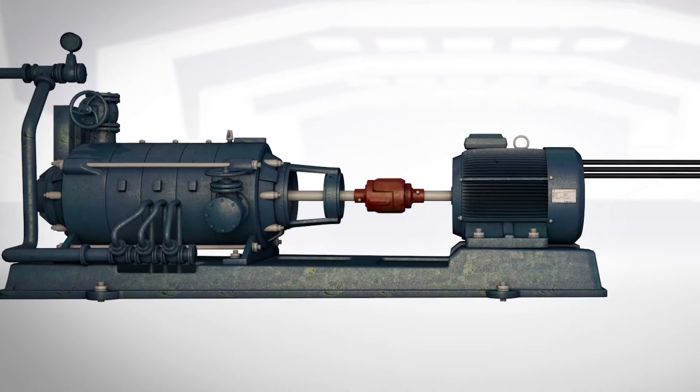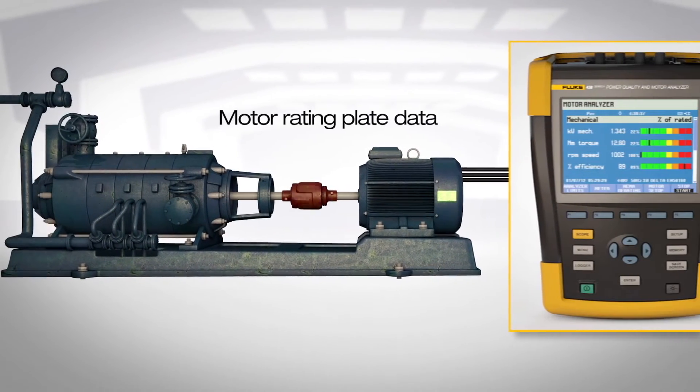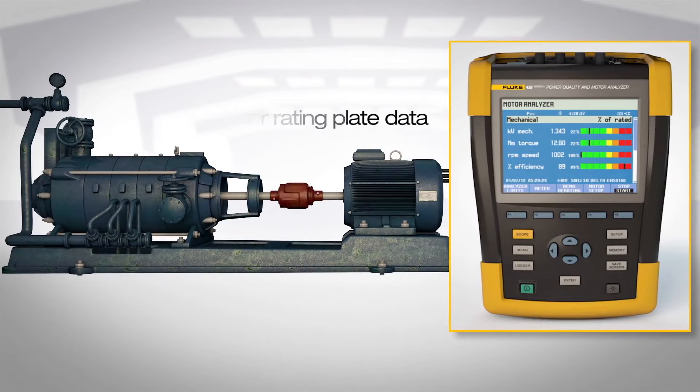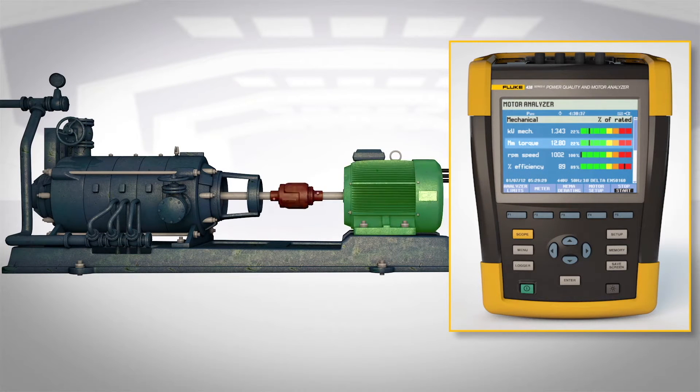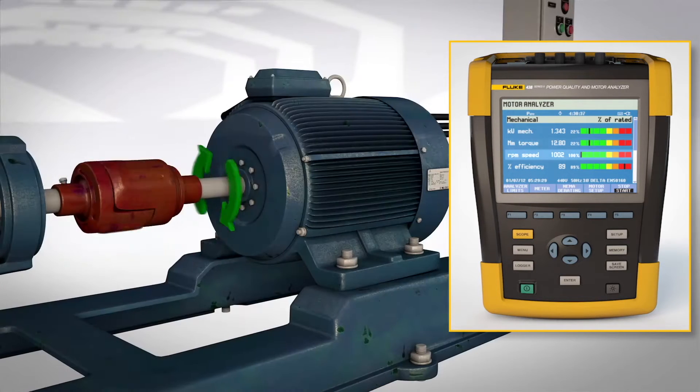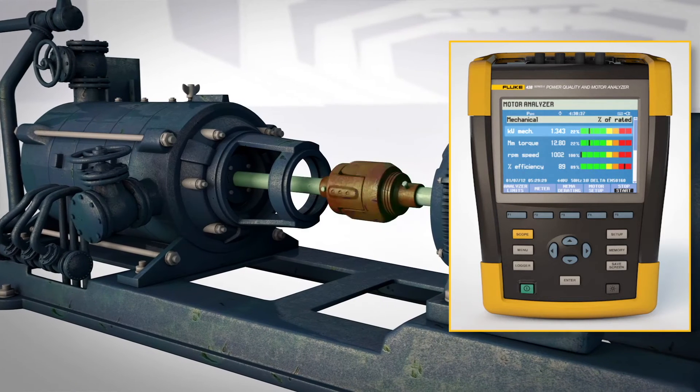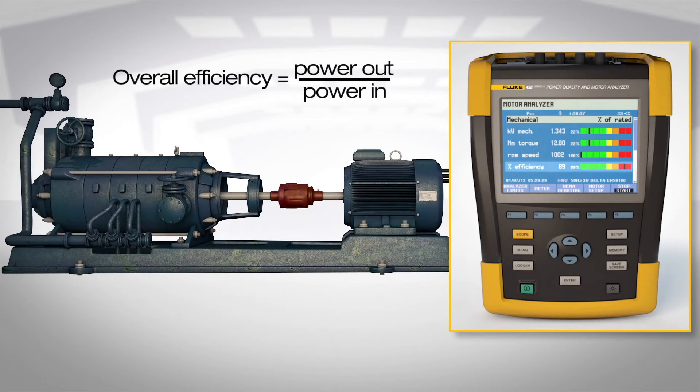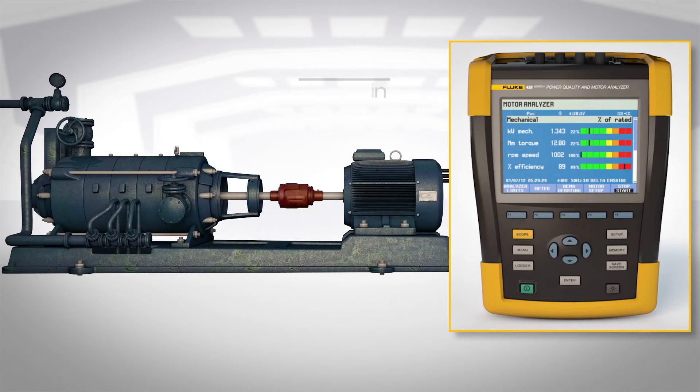Using three-phase electrical measurements on the input and motor rating plate data, the 438 calculates torque, the most critical mechanical performance variable, speed, load on the motor shaft and overall efficiency without the need to install mechanical sensors.